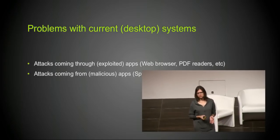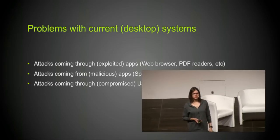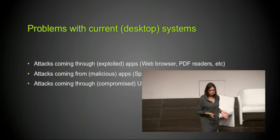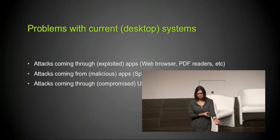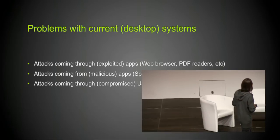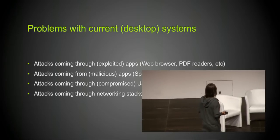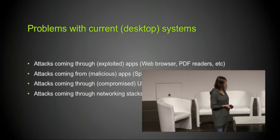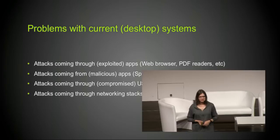Attacks coming through malicious applications that we accidentally installed — spyware, backdoors, whatever. Attacks coming through USB devices, which might be untrusted because they might have a file system with malformed metadata, or maybe a malformed partition table, which exploits some hypothetical bug in a kernel file system module. Or maybe they have malicious firmware, as some recent proof of concept showed this year. Attacks coming through networking stacks — Wi-Fi drivers, DHCP client — like bashocalypse, the DHCP client exploit a few weeks ago.